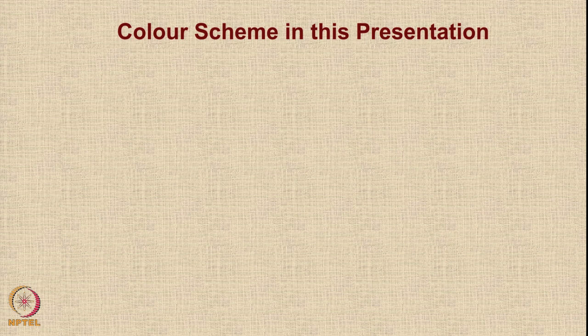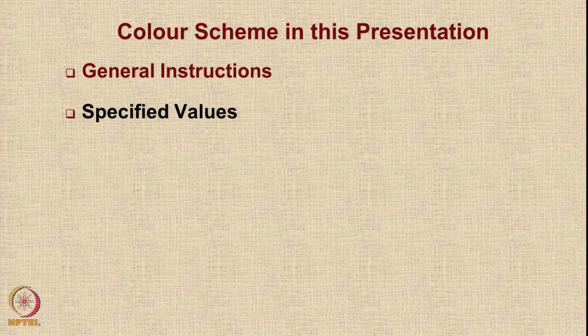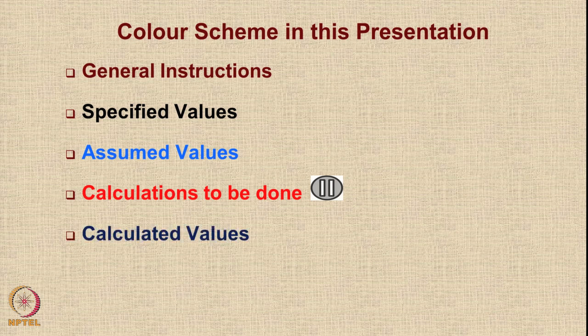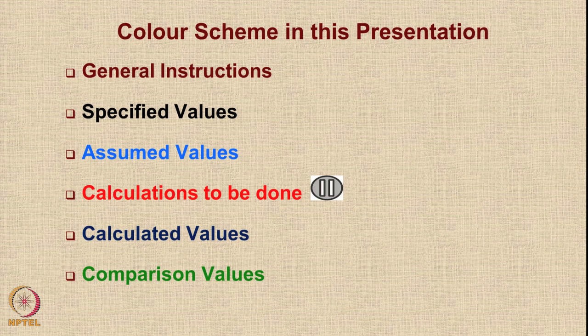In this presentation, we will follow a color scheme. General instructions will be in brown color. Specified values from the Boeing 787 database will be shown in black color. Assumed values will be in blue color. Calculations to be carried out will be marked with red color — when you see red, some calculations need to be done. A pause button will remind you to stop the video, do the calculations, and then resume. Calculated values will be shown in dark blue color. Towards the end, we will compare our data with a source, and those comparison values will be shown in green color.